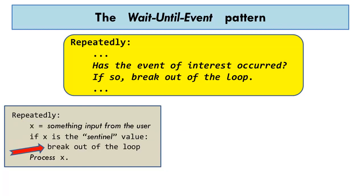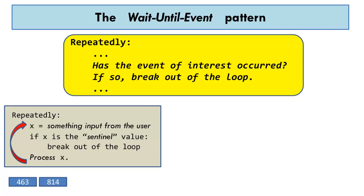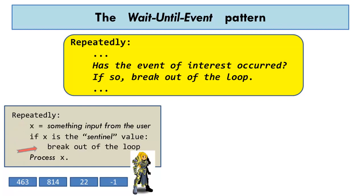For example, perhaps the user is entering numbers with minus 1 as the sentinel value. The user enters 463 — it gets processed. The user enters 814 — it gets processed. The user enters 22 — it gets processed. Finally, the user enters minus 1, the value that the program and the user have agreed to use as the sentinel. The sentinel guards against the loop continuing, and the code breaks out of the loop.